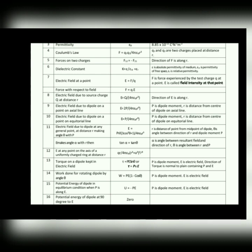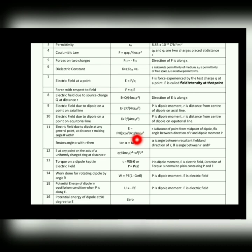For a general point — not on the axis or equator — the formula is E = p√(3cos²θ + 1) / (4πε₀r³). This formula is used in entrance exams when electric field is asked at a general point. All these formulas that we have derived or that you have studied with proofs are compiled in this PDF and slide for shortcut MCQ solving.